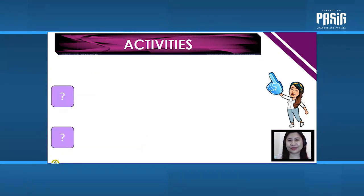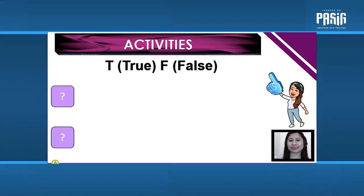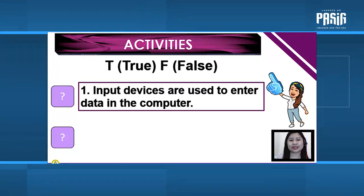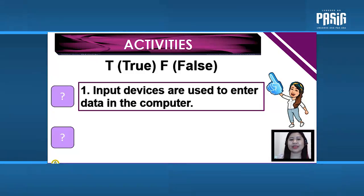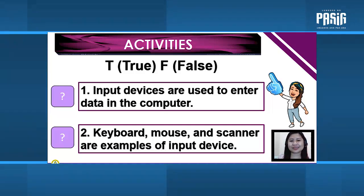Now let's proceed with the next part of the activity. All you have to do is to identify if the statements are true or false. Number 1: Input devices are used to enter data in the computer. Number 2: Keyboard, mouse, and scanner are examples of input devices. Answers: 1 — True. 2 — True.